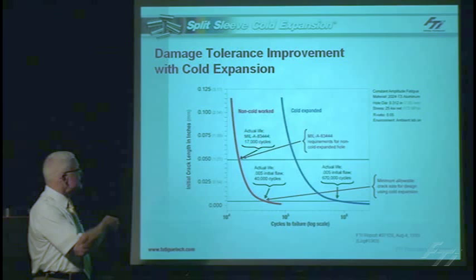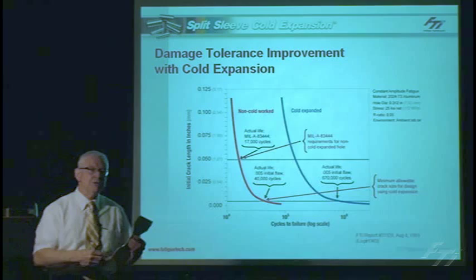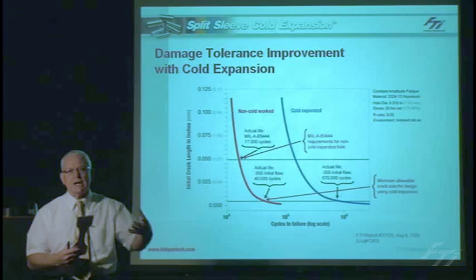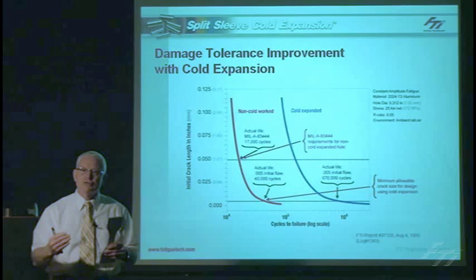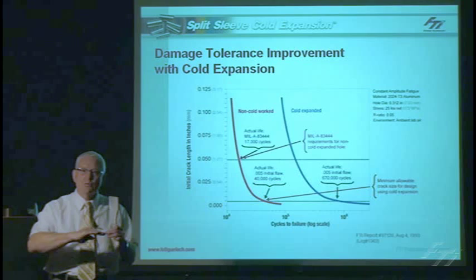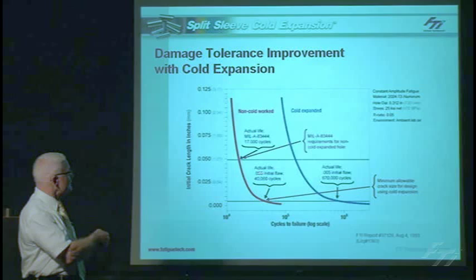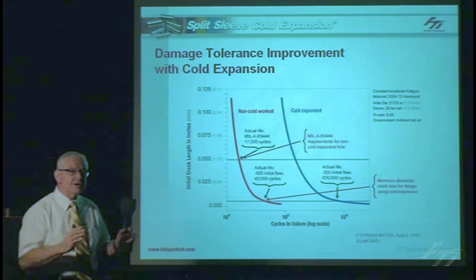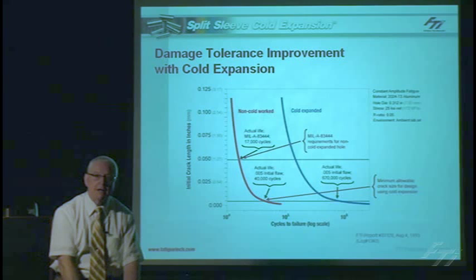Now if we cold expand the hole, rather than doing all the analysis to show what the residual compressive stress is and working out the reduction in stress intensity factor — which can be very labour intensive — what they can do is assume that if you cold work the hole, you now have a smaller initial flaw size, and then work out your residual crack growth life from that. That life from a 5 thousandths crack would be about 40 thousand cycles — a very conservative approach to taking the benefit from cold expansion in repair and damage tolerance analysis.